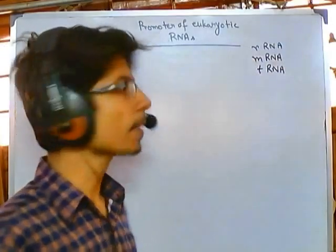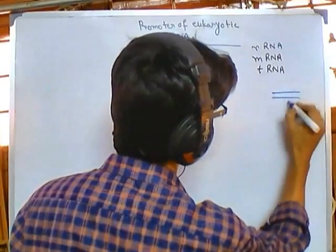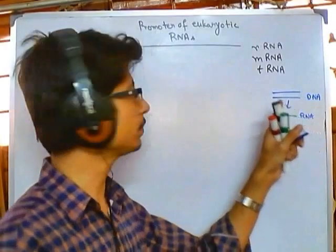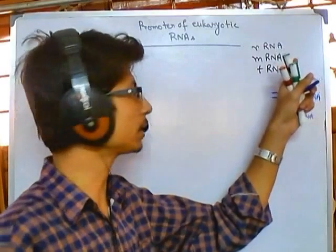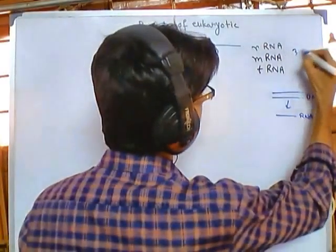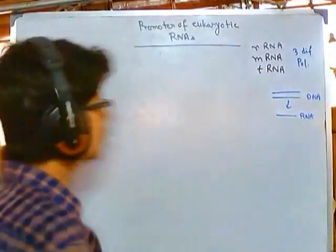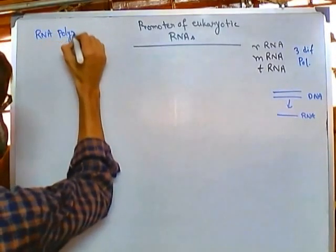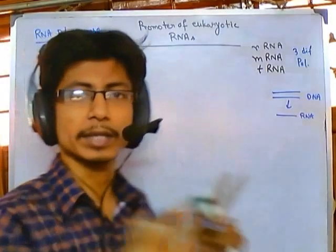Transcription is the process by which a DNA sequence is used to produce RNA. In the eukaryotic system, for the three different varieties of RNA — mRNA, tRNA, and rRNA — we have three different types of RNA polymerase available inside the eukaryotic cell.